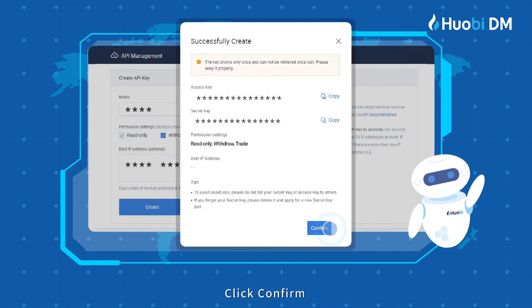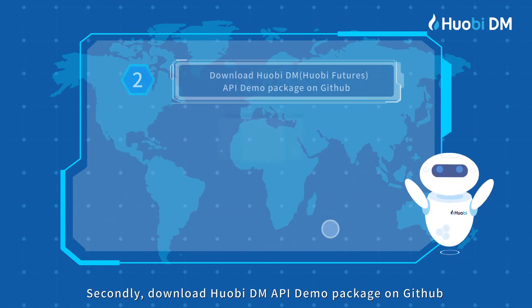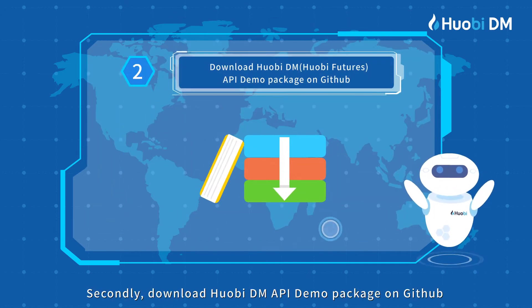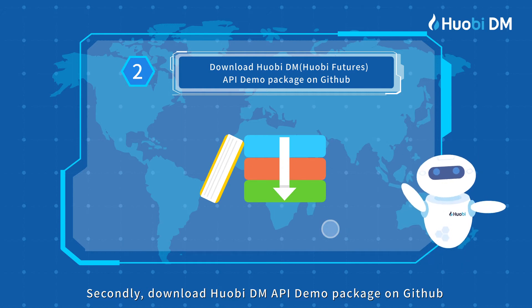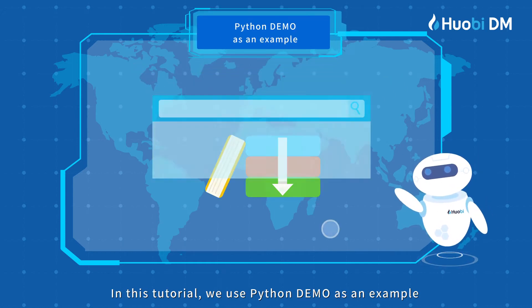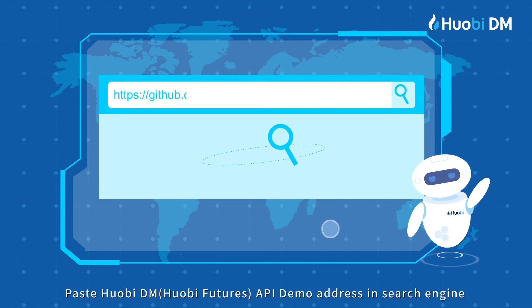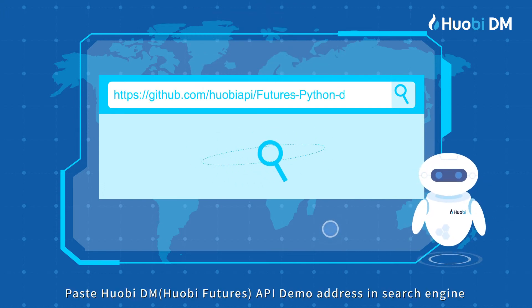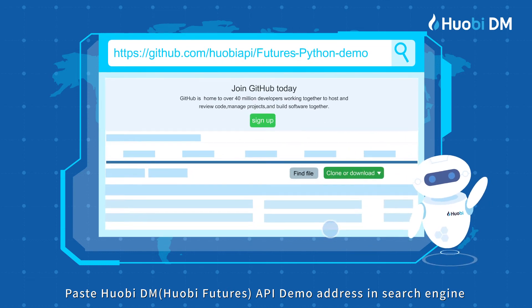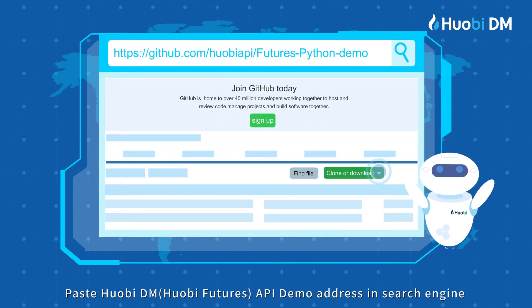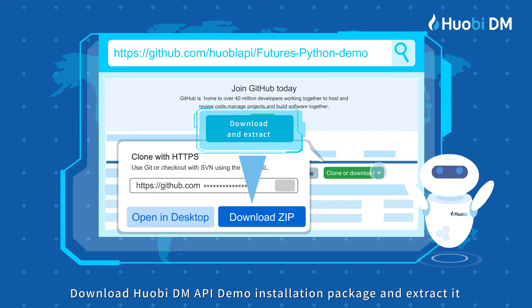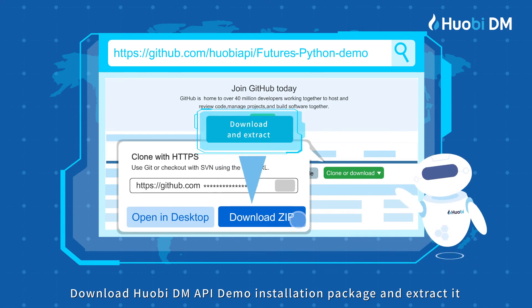Click Confirm. Secondly, download the Hwabi Futures API demo package on GitHub. In this tutorial, we use a Python demo as an example. Paste the Hwabi Futures API demo address in a search engine. Download the Hwabi Futures API demo installation package and extract it.